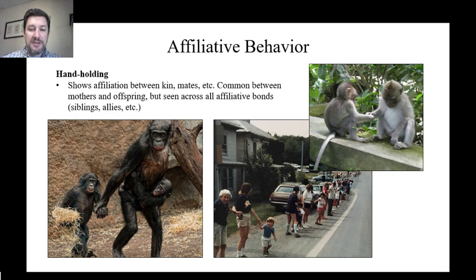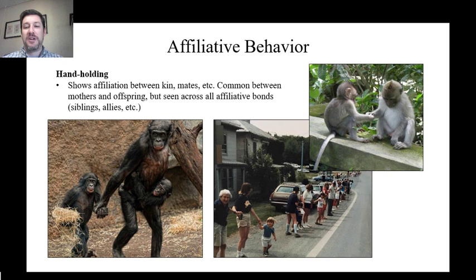Another common affiliative behavior we're familiar with is hand holding. Humans hold hands all the time — between mates, between adults and children, between friends. We also see that in primates. It shows affiliation between kin or mates, and that physical bond builds a connection between individuals. It's extremely common between mothers and offspring but also seen across all affiliative bonds — there are examples of whole troops of macaques sitting around holding hands and trading off hand holding over time.